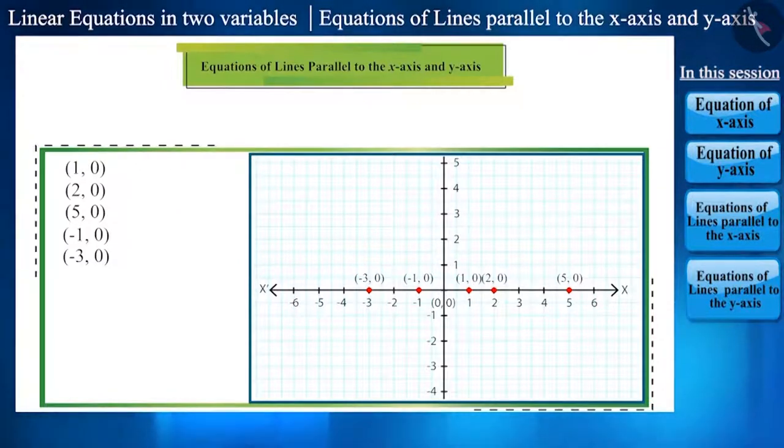we can say that the points whose y-coordinate is 0 or which is in the form of x, 0 will lie on the x-axis. The line formed by all the points in the form of x, 0 is the x-axis.